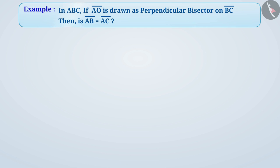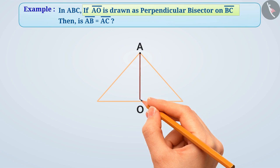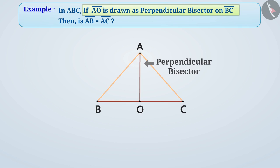It is always helpful to draw a rough figure to solve these type of questions. We are given that line segment AO is perpendicular bisector of line segment BC. Try to think what does this mean?